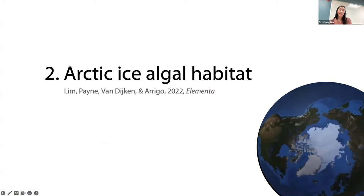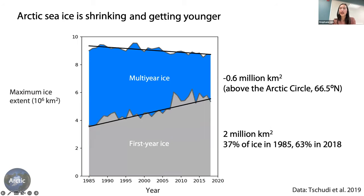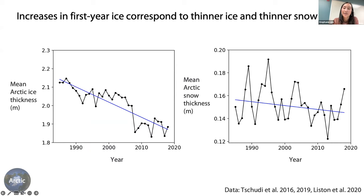Now turning to the Arctic, which tells a very different story. The Arctic is seeing a consistent steady decline in sea ice extent, and Arctic sea ice is also getting younger — first-year ice has increased in proportion and extent because the Arctic loses more ice in summer than winter. First-year ice is thinner and has less time to accumulate snow, so has a thinner snow cover. Over a 34-year time series, both ice thickness and snow depth in the Arctic have decreased.